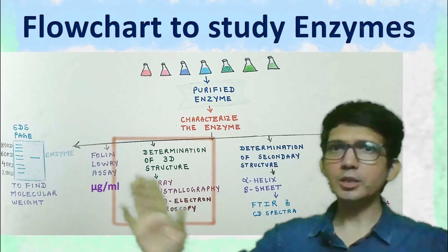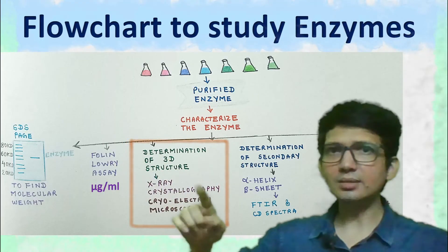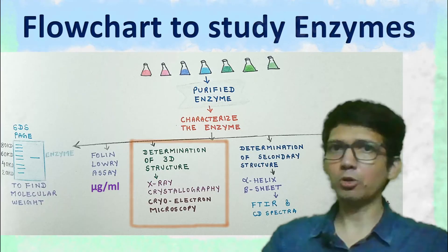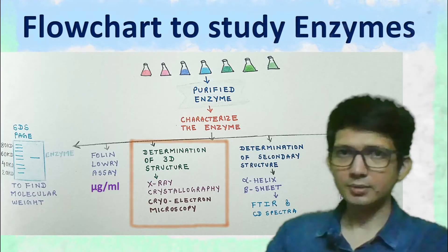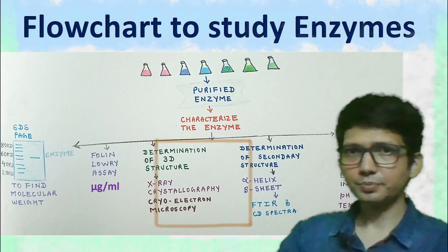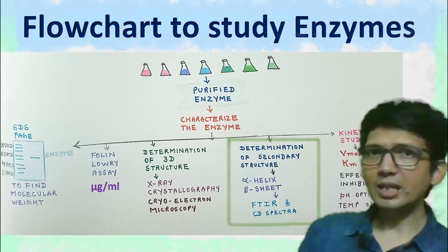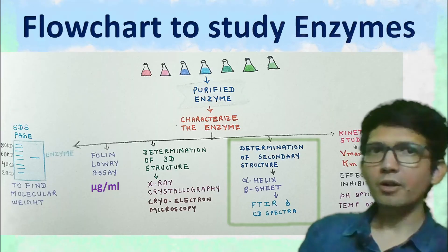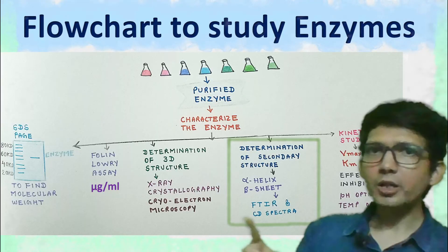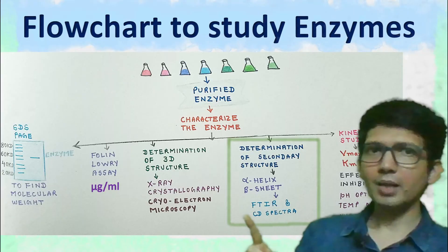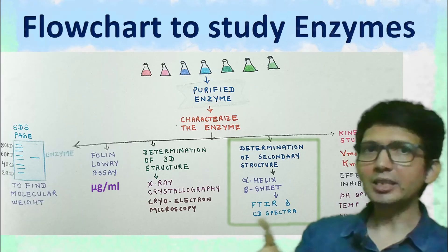Next, to determine the 3D structure of the enzyme, we can use X-ray crystallography and cryo-electron microscopy. To determine the presence of alpha helix or beta sheet in the enzyme, we can perform Fourier transform infrared spectroscopy and CD spectra.